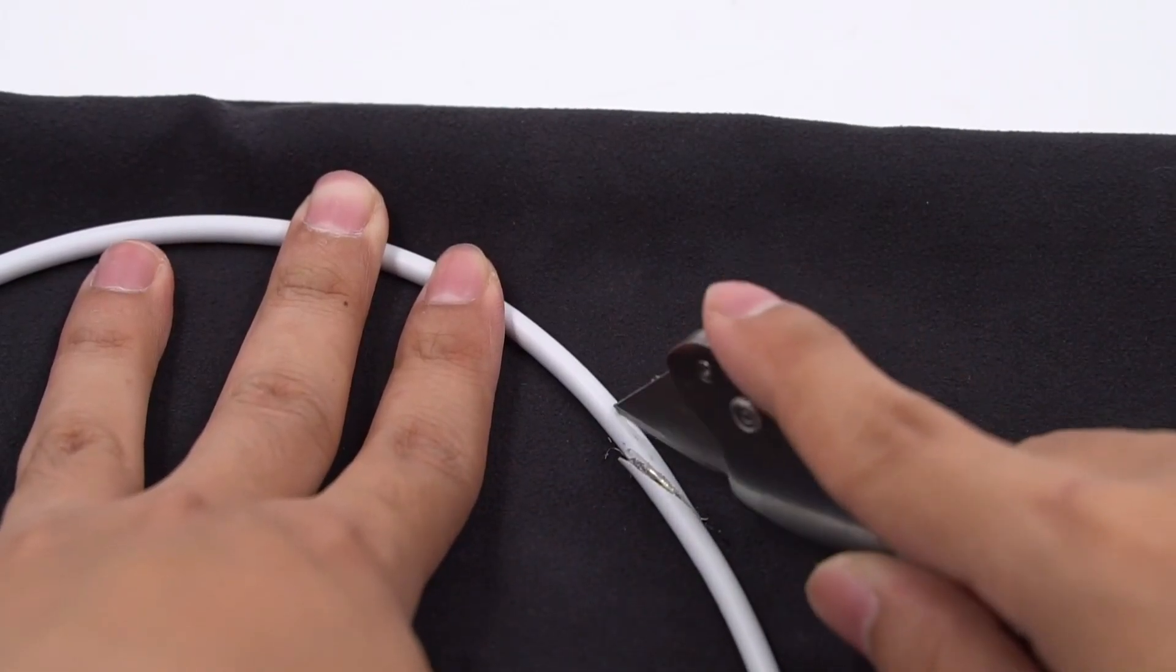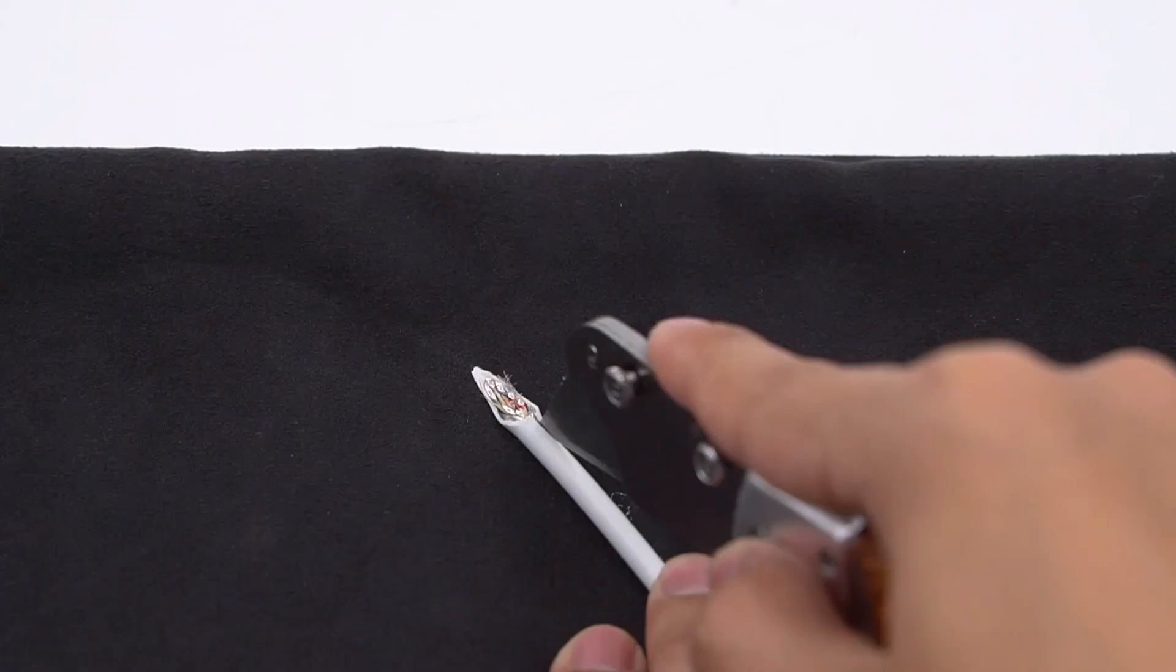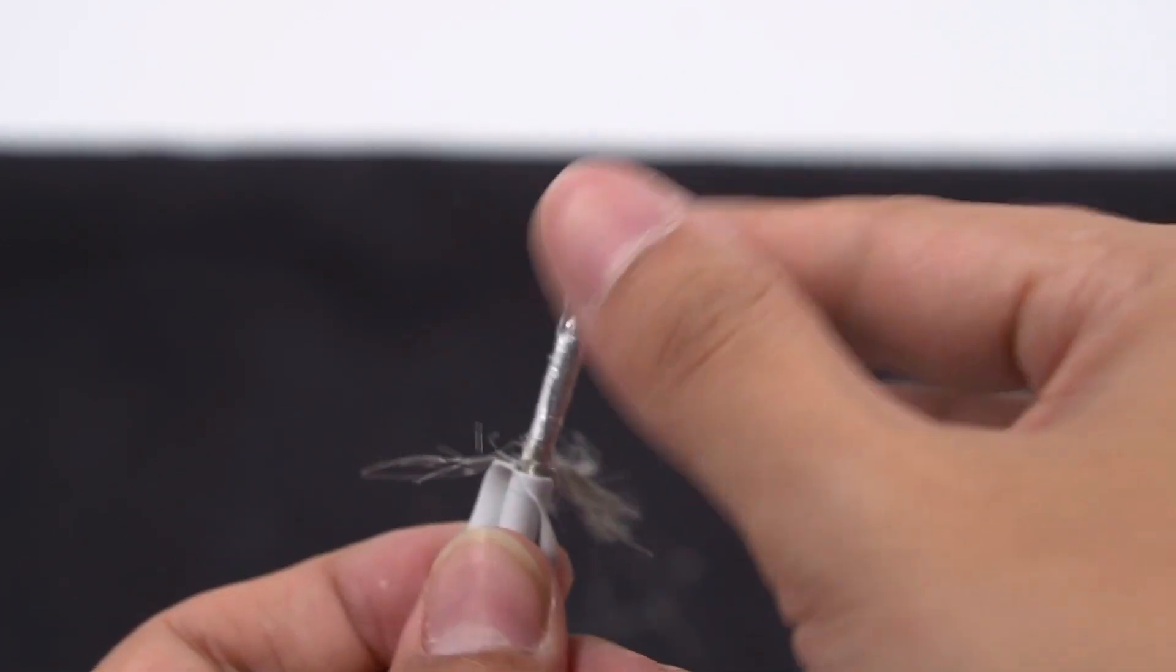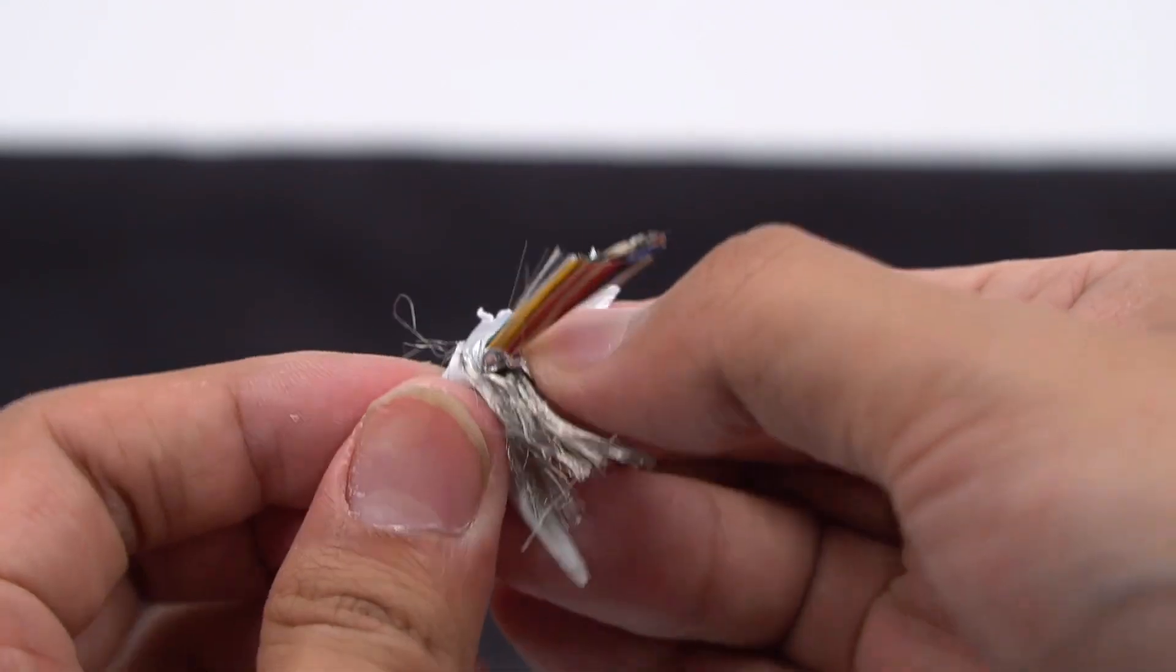Next, let's look at the cable core. There are 15 cores in total. Cut the outer skin little by little. The first layer is a metal shield. After that, we can see the tinfoil shielding layer. And then there are 15 cores inside the tinfoil.